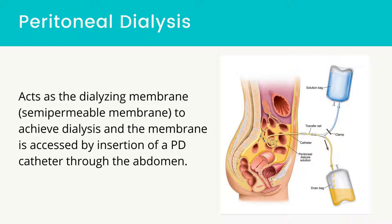The peritoneal membrane is large and porous, allowing solutes and fluid to move via osmosis from an area of higher concentration in the body to an area of lower concentration in the dialyzing fluid. The peritoneal cavity is rich in capillaries, therefore it provides ready access to the blood supply.